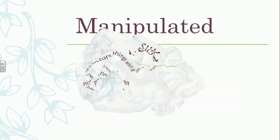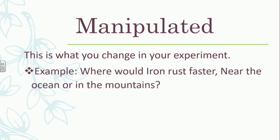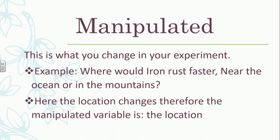A manipulated variable is what you change in your experiment — what are you changing or really testing? It's something you will have to change. In our example, where would iron rust faster — near the ocean or in the mountains? Here, the location changes, so the manipulated variable is the location. We're trying to find out where the iron rusts faster, so we're changing the location. You don't need to put anything else except the location.